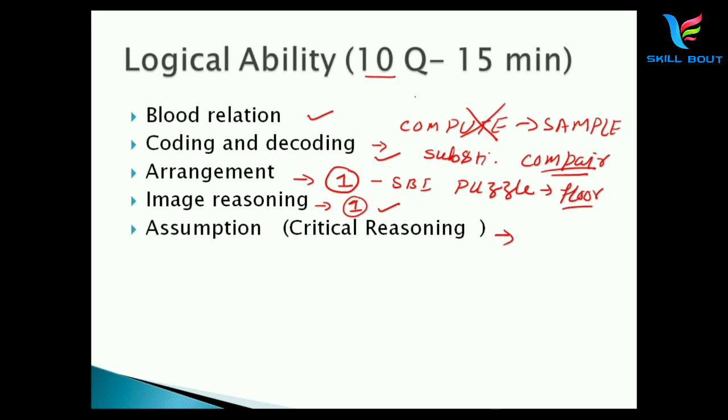For these 10 questions in 15 minutes, don't try all of them. Select 8 questions and solve 7 correctly. Your name will definitely be in the selection list. Dedicate all 15 minutes to those 7 questions. This is the same strategy I used for my quantity paper, which I found quite logical rather than wasting time on all 10 questions and not solving them correctly.